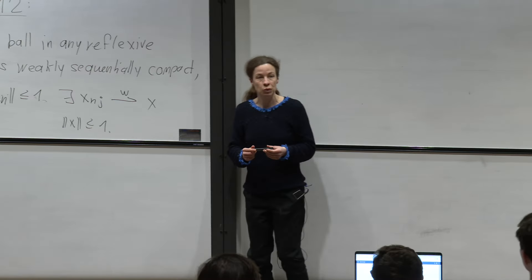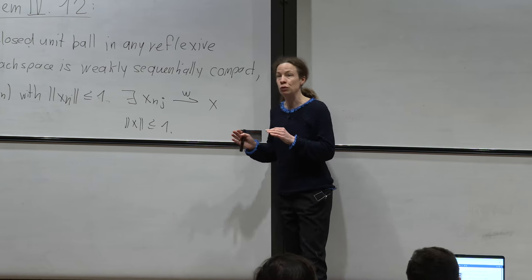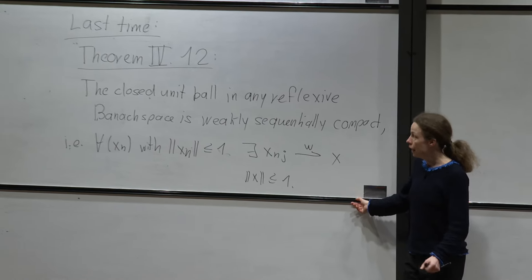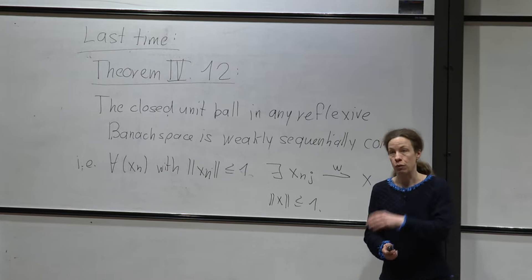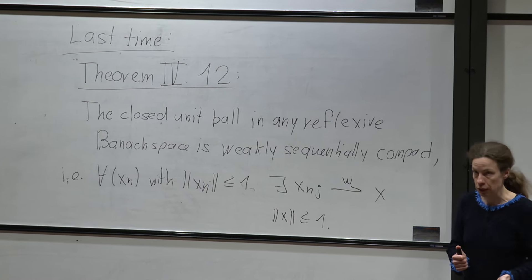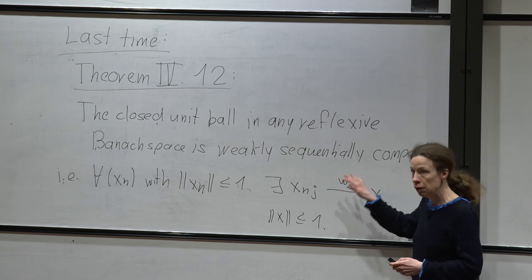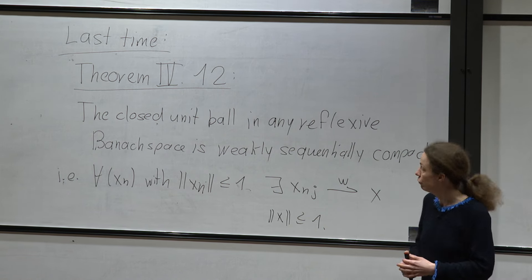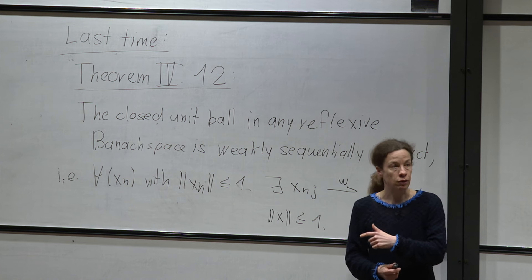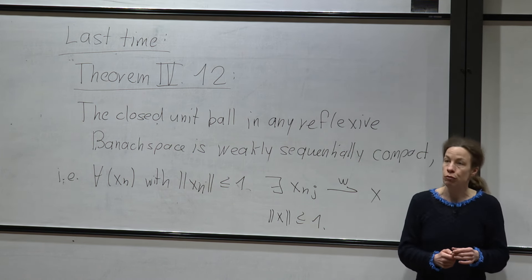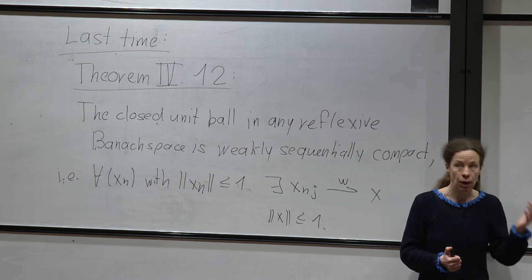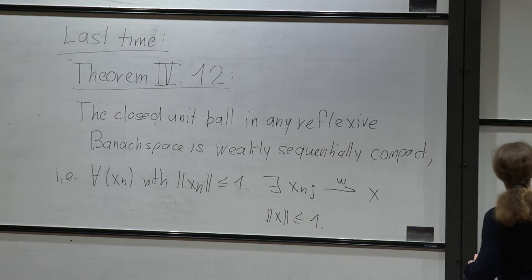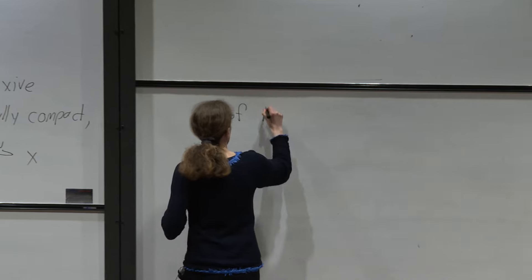Welcome to the last lecture on having fun with weak convergence. We have some hard work to do and then some fun stuff. The hard work is to prove the theorem we stated last time: whenever you have a bounded sequence in a reflexive space, it has a weakly convergent subsequence. We'll prove this in Hilbert spaces, as the general proof for reflexive Banach spaces goes beyond this course. Then we'll use that to prove that nonlinear functionals on infinite dimensional spaces achieve their maxima and minima if they are nice.